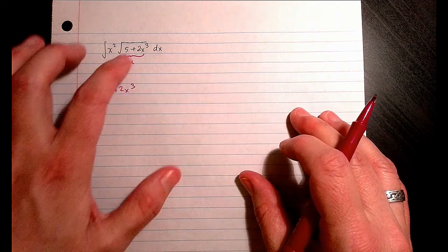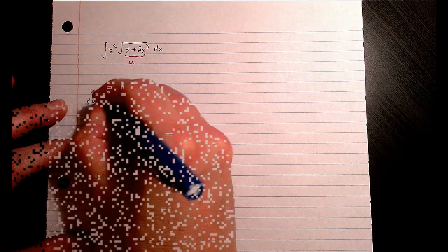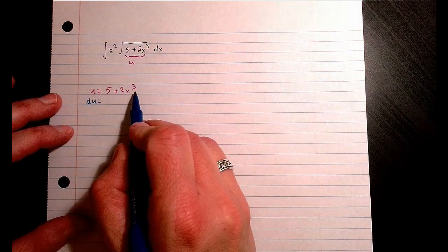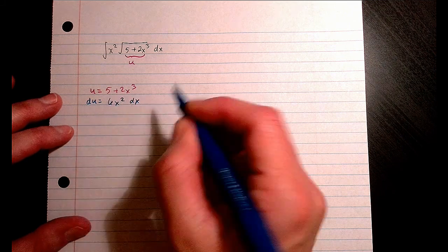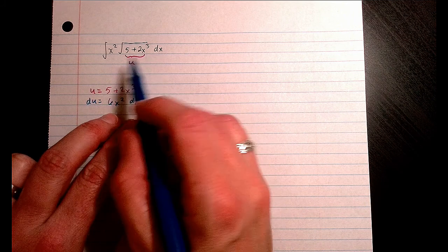Okay. So that's going to be my u. So now what I need to do is create my du. This is just straight power rule. Now remember, your du should take into account what is outside whatever u is inside.